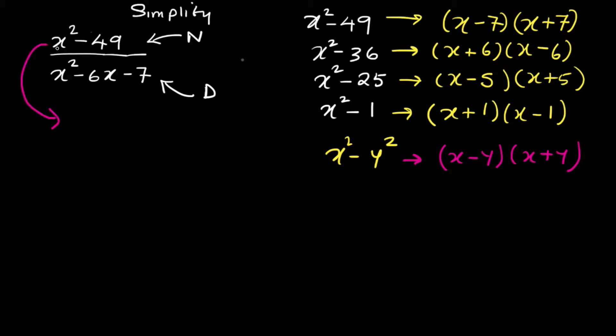Good. Okay. Coming back to this then. What is x squared minus 49 factorized? So it's going to be x minus 7, x plus 7.